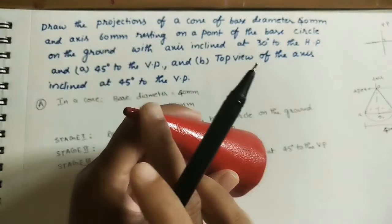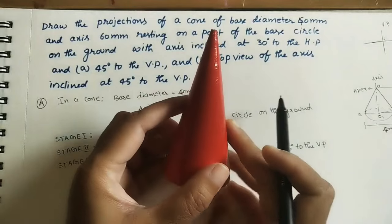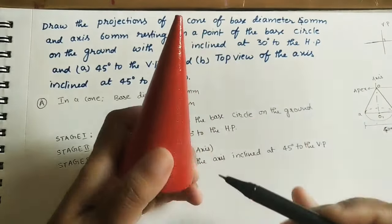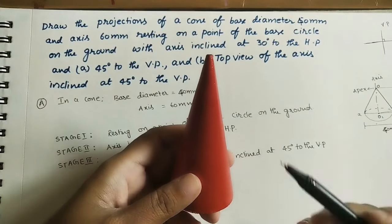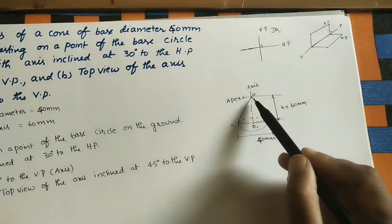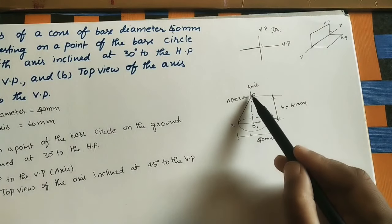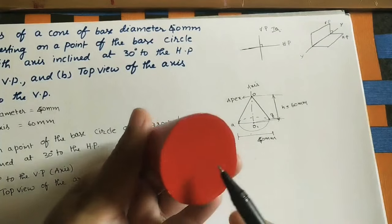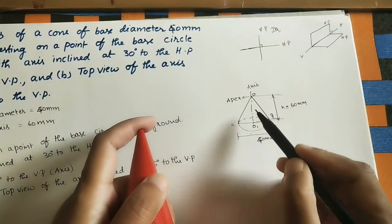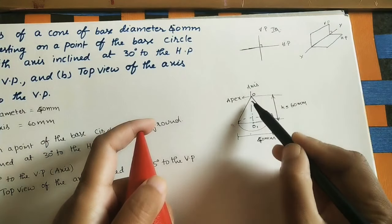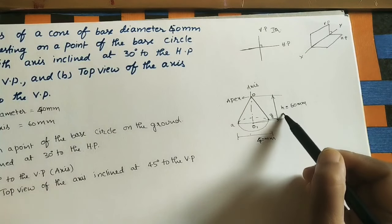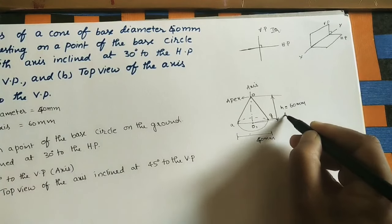The apex and the circle are joined by generators. A generator is a line on the inclined surface — there are infinite generators on this surface. The line passing through the center of the base circle (O1) and the apex (O) is called the axis, which is an imaginary line. The height O to O1 is called the height of the cone, also referred to as the axis length.